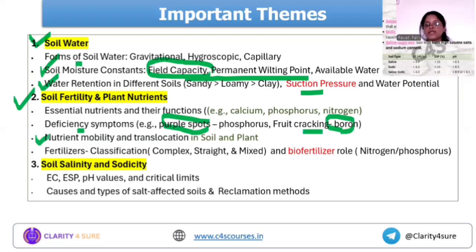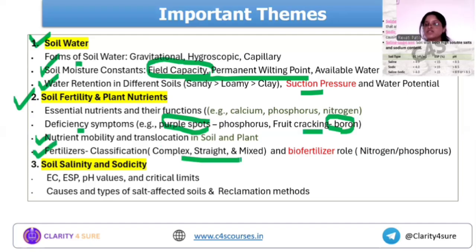Nutrient mobility and translocation in the soil and plant is important: which nutrient deficiency appears on old leaves versus new leaves — there is a specific concept around this. Next is fertilizer classification: complex versus mixed fertilizers. Know the examples — for instance, DAP is a complex fertilizer. Go through the examples thoroughly.